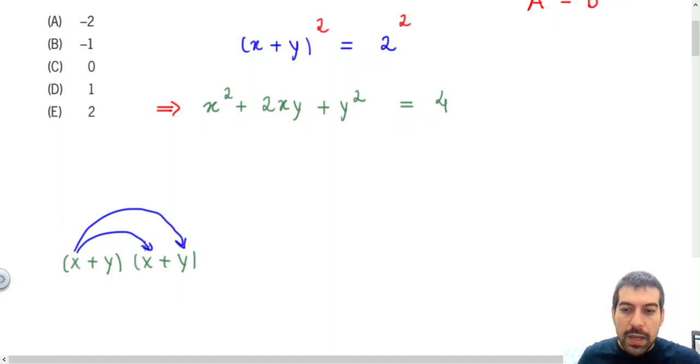So it means that x times x, for example, will be x squared, x times y will be xy, and doing the same thing with the second term here...